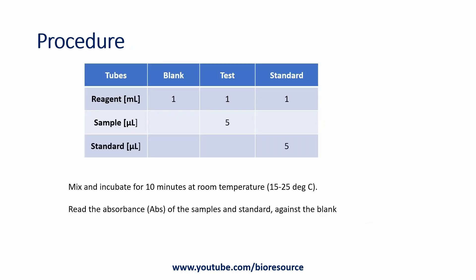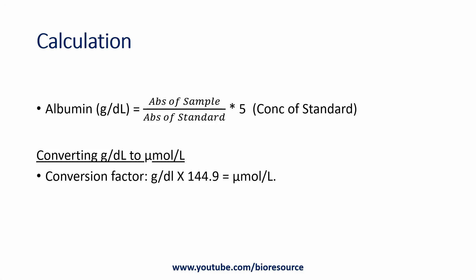To test the sample, first take three different tubes labeled as blank, test, and standard. To each tube, add one milliliter of reagent. To the tube labeled test, add five microliters of the serum sample, and to the tube labeled standard, add five microliters of the standard solution. Mix and incubate for 10 minutes at room temperature, then read the absorbance and correlate with the standard against the blank.